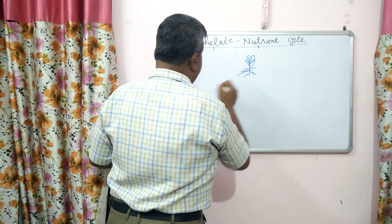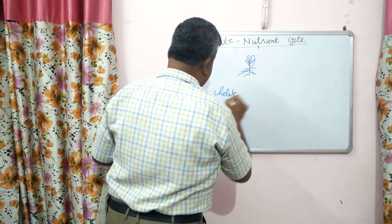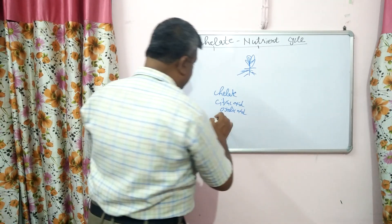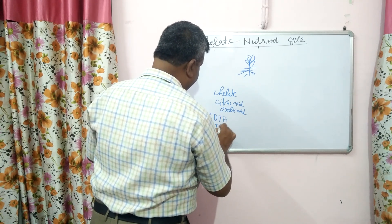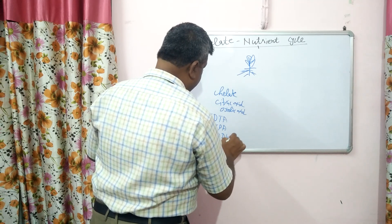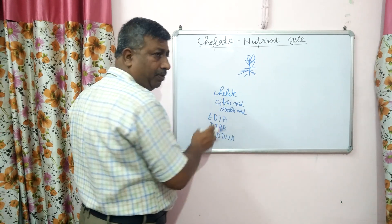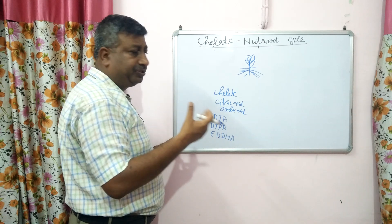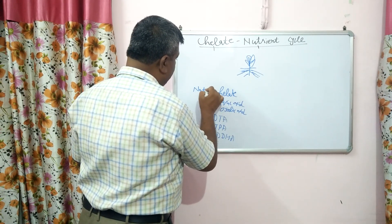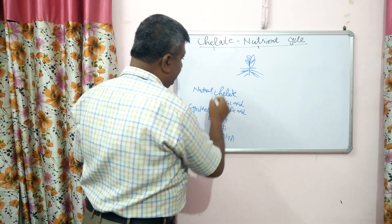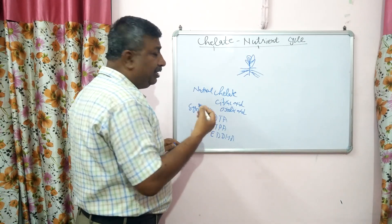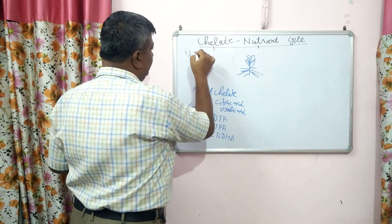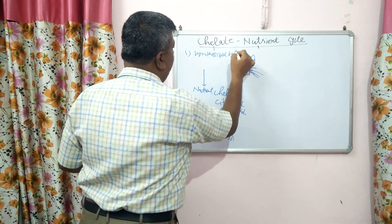Suppose this is the root and this is the plant. Chelates are present — for example, citric acid and oxalic acid are natural chelates, and the synthetic ones may be EDTA, DTPA, or EDDHA. There are many organic natural compounds. Natural chelate formation takes place in the soil; synthetic chelates are applied by fertilizer manufacturing. Natural chelates may be synthesized by microbes or present in root exudates.